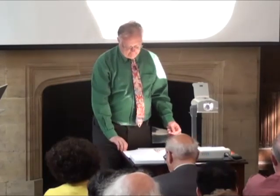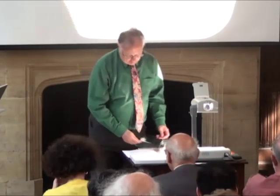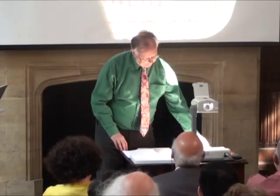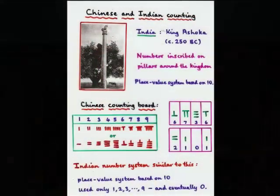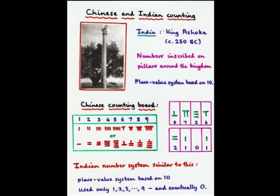I'm now going to turn to the mathematics of China and India. Around 250 BC in India, King Ashoka's edicts were written on vertical pillars around the kingdom and numerical information appeared on these pillars. It was written in a place system based on 10 and seems to be the origin of what we now call the Hindu-Arabic numerals, the numerals we use now with its separate columns for units, tens, hundreds, and so on.